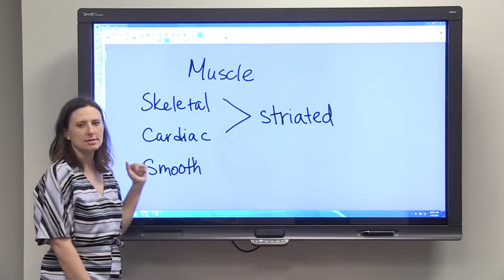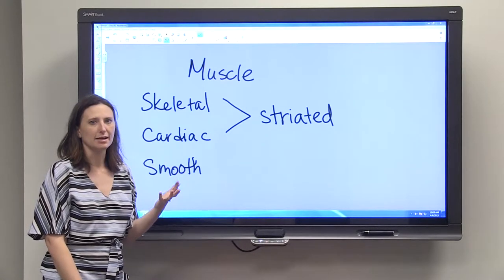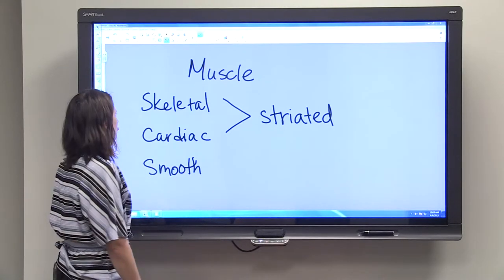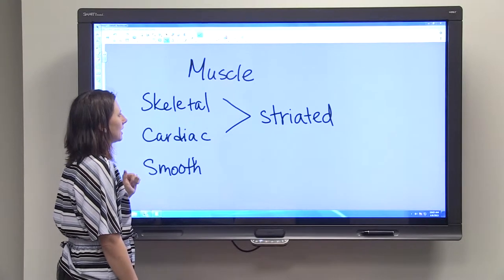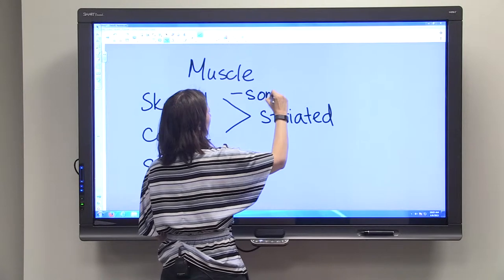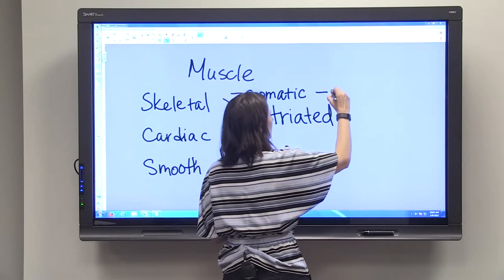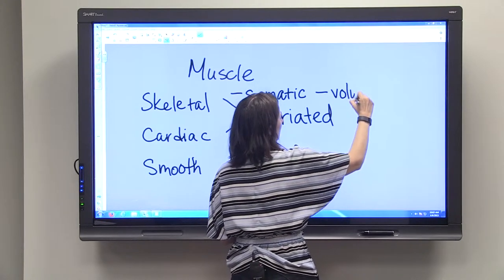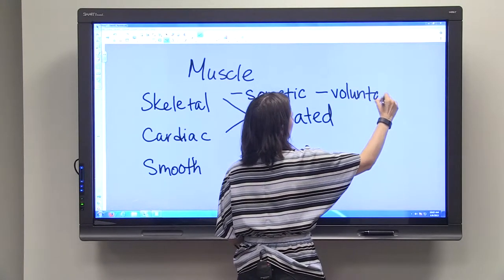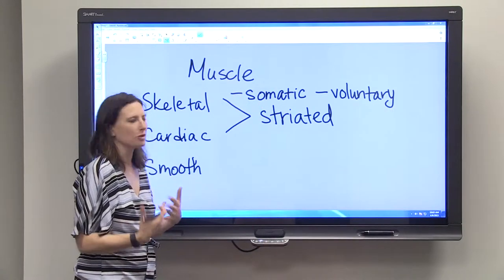Skeletal muscle is the muscles that control your movement, your arms, your legs, and so those are controlled by your somatic nervous system. All muscles are controlled by the nervous system and your somatic nervous system is voluntary. So you choose, for the most part, when you move those muscles.